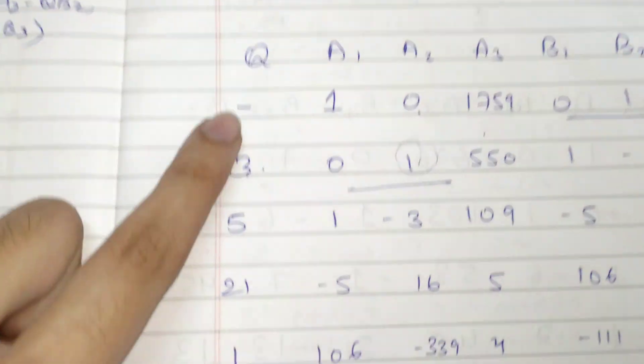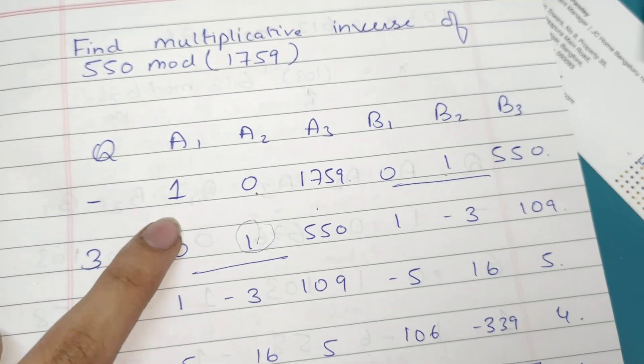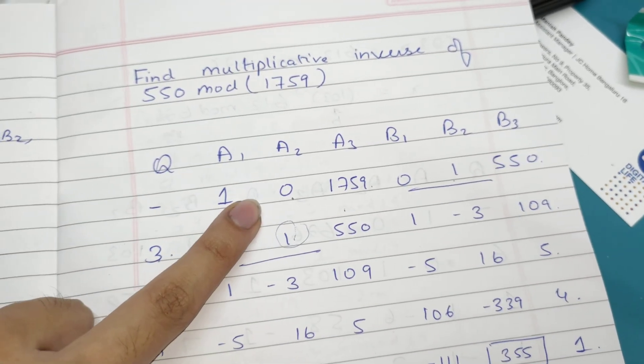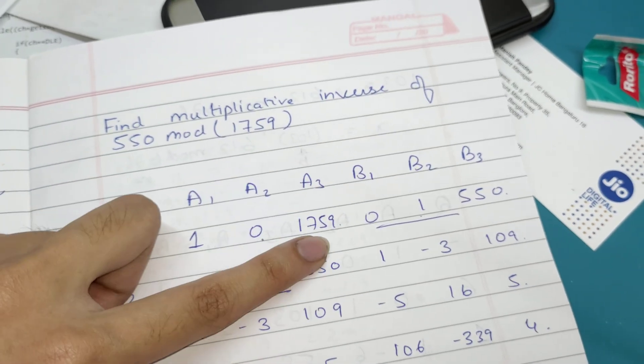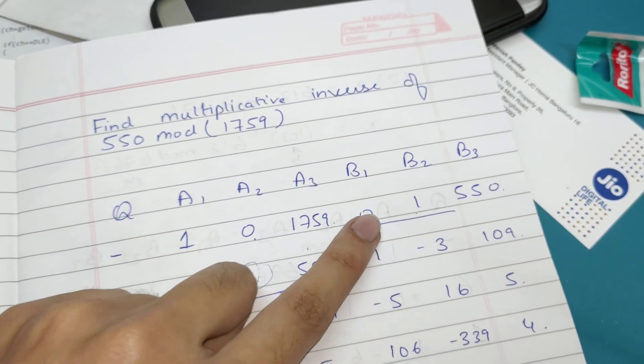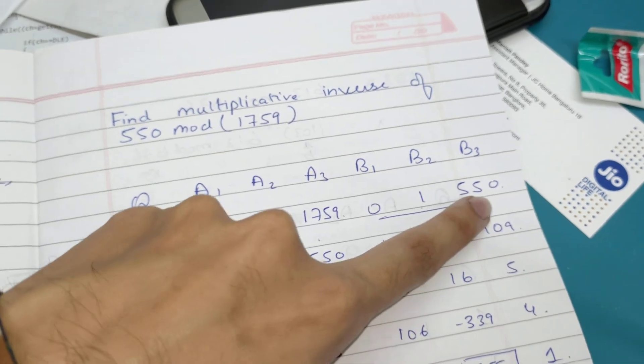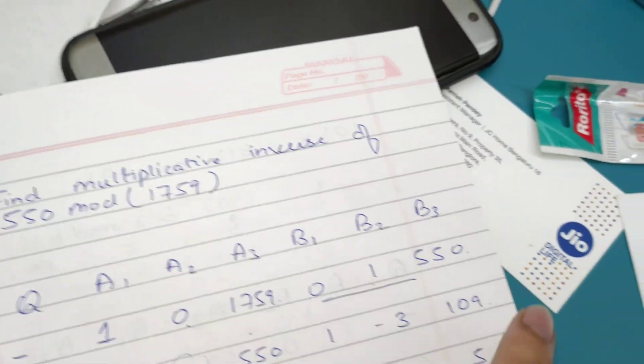First you need to put -1, 0 (these are default). Then you have to put 1759, the value given here. Again, these two are default values: 0, 1. Then 550, whatever is given here, you write that value.